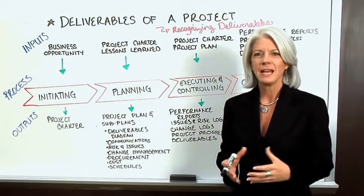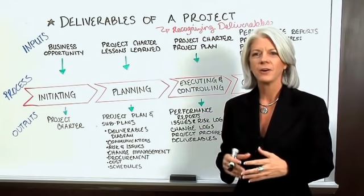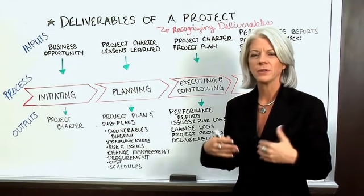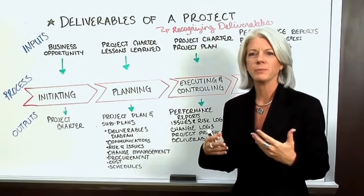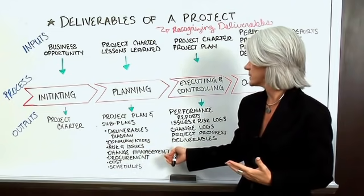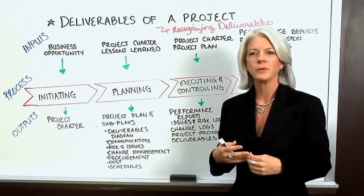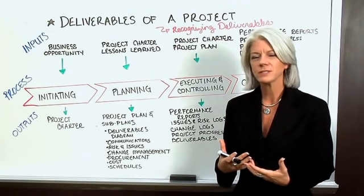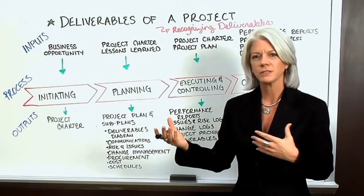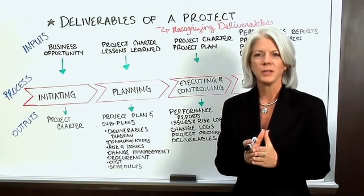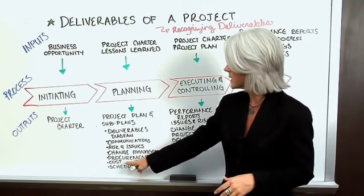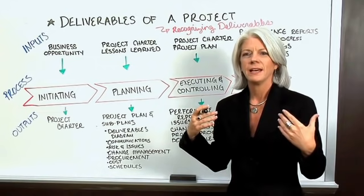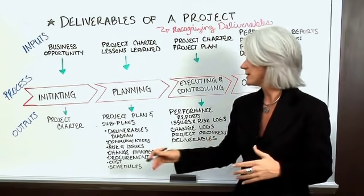And then the change management process. We all know change will happen, so it's important to know upfront what process we're going to use to manage changes, how they're going to come in, how they'll be assessed, and who are the people who need to decide. Then procurement — how are we going to procure resources and assets, whether in-house or from vendor partners, what approvals are needed, and the cost management process for measuring and managing cost.